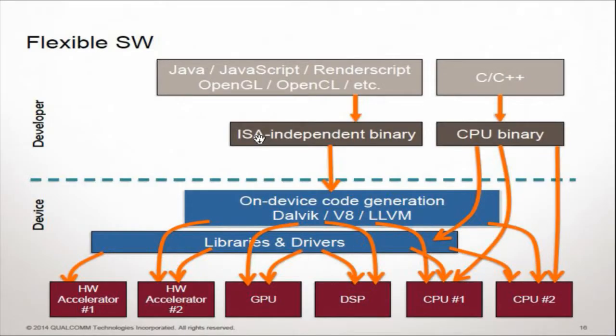From the software side we could also follow the model that is prevalent today in Android — a more flexible software approach. You have something that is ISA-agnostic that basically gets recompiled in some way, whether through dynamic compilation or install-time compilation, and then you can drive the specific hardware engines that you have on your die. This is another possibility, but it isn't necessarily the best solution overall since there are always concerns about optimization efficiency — and there's still the issue of trying to test this stuff.